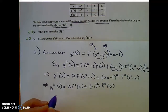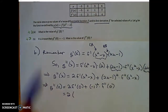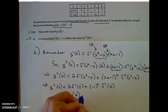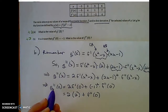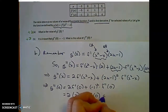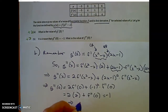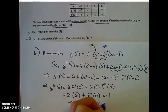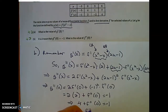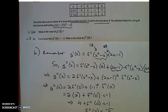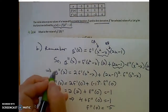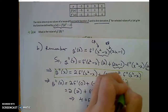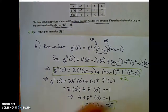Let's plug in. This equals 2 times — f prime of 0 is 2 from the given table — plus 1 times f double prime of 0. But we're given that g double prime of 0 equals negative 1, so negative 1 equals 4 plus f double prime of 0. Solving, f double prime of 0 is equal to negative 5. You were given two points for finding the second derivative, and one point for arriving at the correct answer f double prime of 0 equals negative 5.